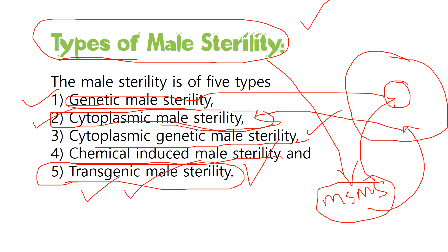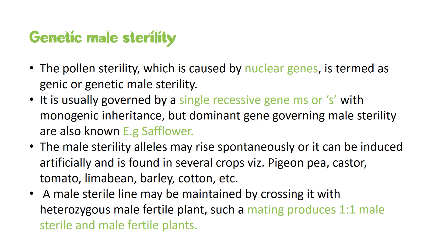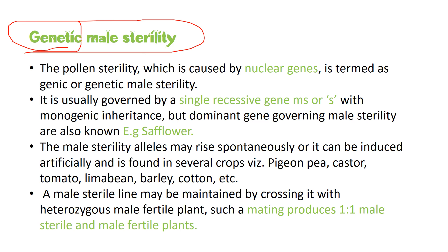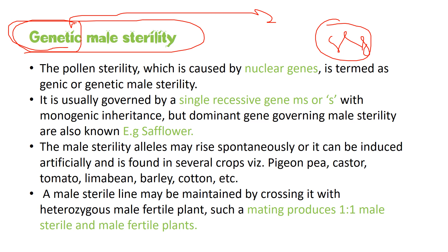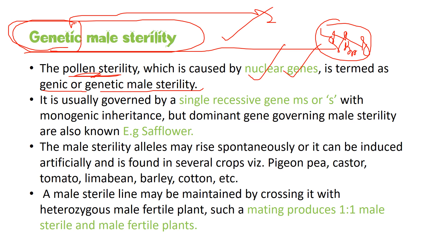Genetic male sterility is mainly concerned with the genes. When you talk about genes, you talk about the nucleus; when you talk about the nucleus, you talk about the chromatin network. The chromatin network contains thousands of genes. When sterility is determined by genes present inside the chromosomes, it is called genetic male sterility. It is governed by a single recessive gene, ms.